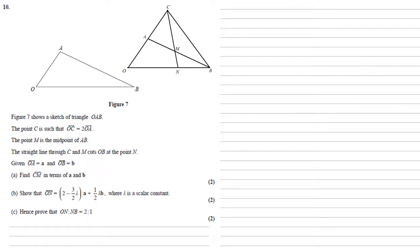Part C, we need to use this to prove that the ratio of ON to NB equals two to one. We know that ON must be equal to mu, where mu is some constant, times OB, because ON is partway along the line OB. We know that ON is two minus three over two lambda A plus a half lambda B. We know that OB is B, so that's equal to mu B.